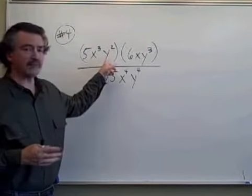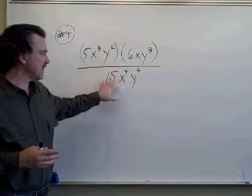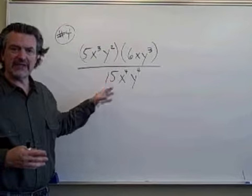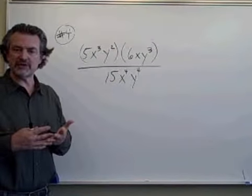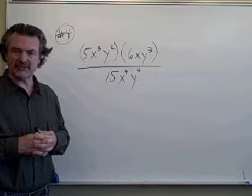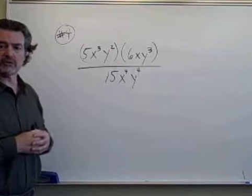Here's a problem where we first have to perform the multiplication, then we will perform the division. And in order to do those two operations, we're going to have to use our properties of exponents. This is problem four from your review sheet.